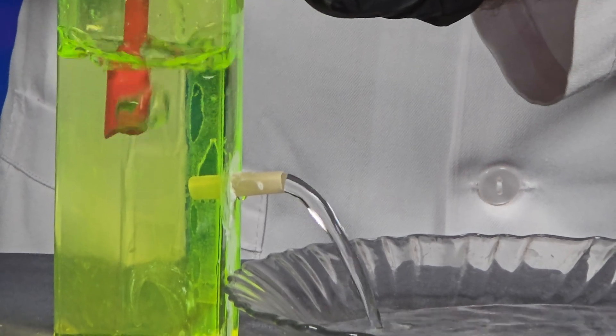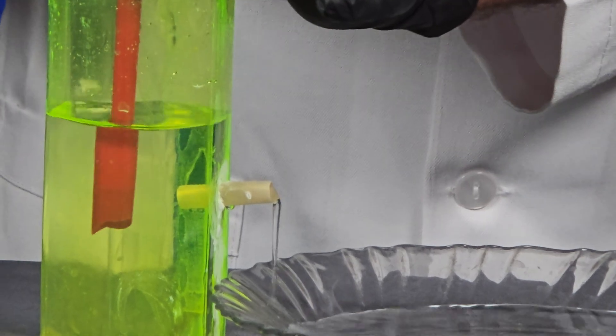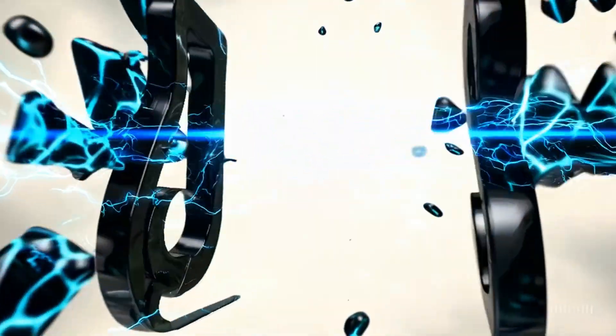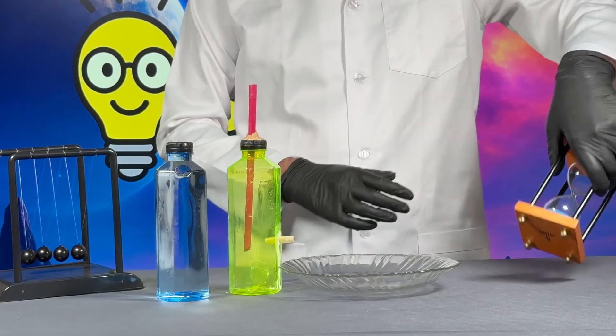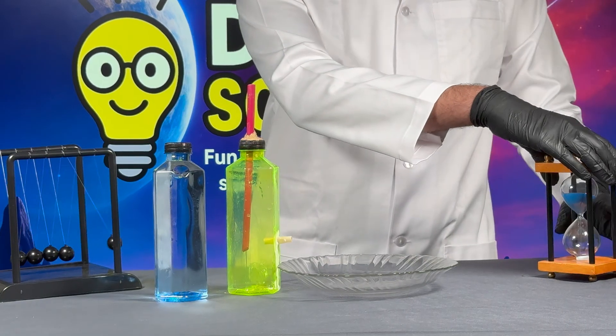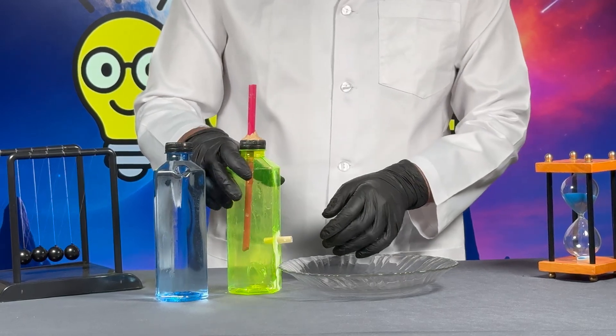What if I told you you can stop water with just air? Watch this. Hello everyone, today we want to show you how to stop water using just air. We take a plastic water bottle and make two holes, one on the side and one on the top.